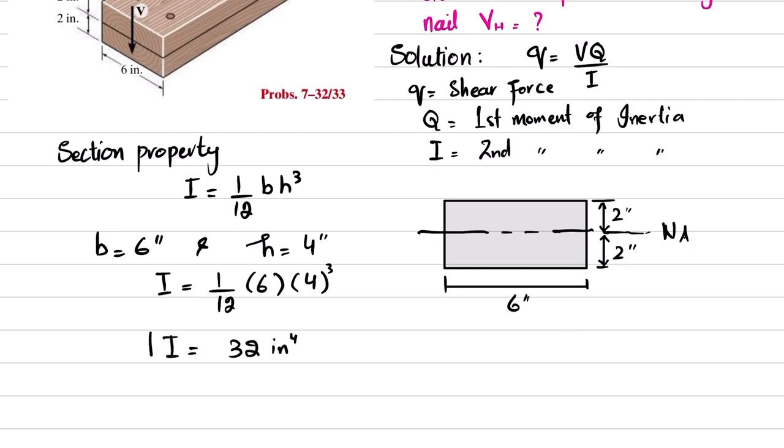Now we will find Q. We know that Q equals y-bar times A. This area is about the neutral axis. This area A is equal to two times six, which equals 12 square inches.